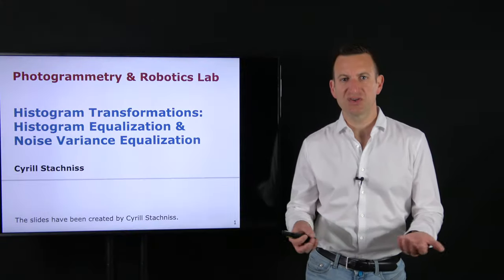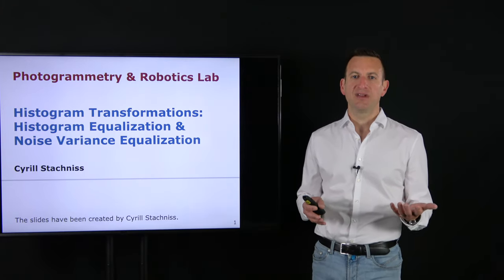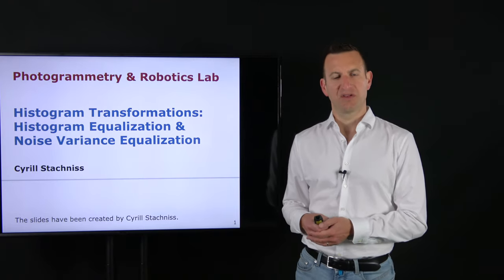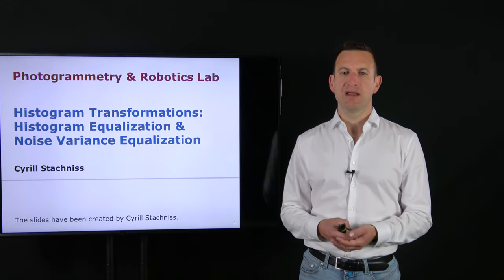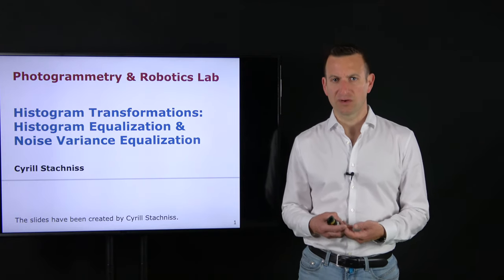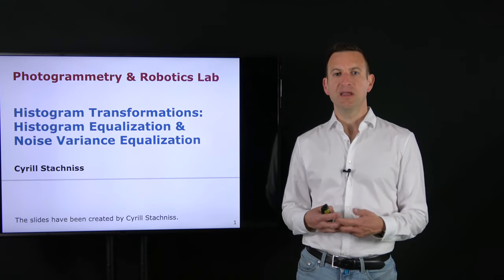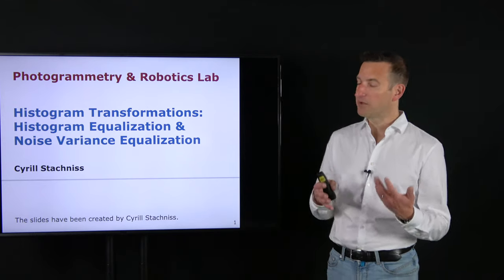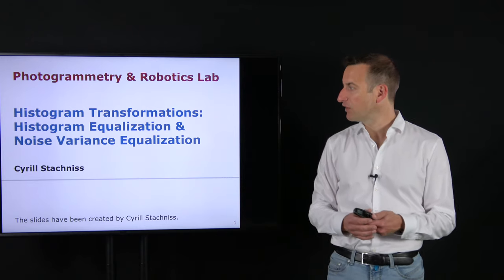Welcome to today's lecture, which is part two of the lecture on image histograms. Today we want to look into transformations of images and the impact on the resulting histograms. We started with this in the first part and now we want to dive deeper and investigate how we can design transformation functions that map an input image into an output image. We will specifically look into two techniques: histogram equalization and noise variance equalization.